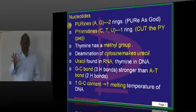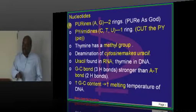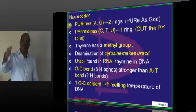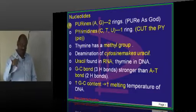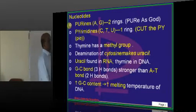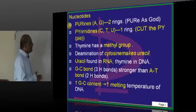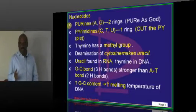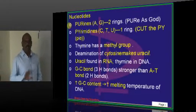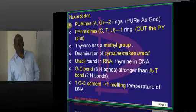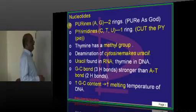Out of all this, it is thymine which has a methyl group. Y for Y. Methyl group. How is uracil formed? It is cytosine. If it undergoes deamination, it forms the uracil. Uracil is what you have to fundamentally appreciate.